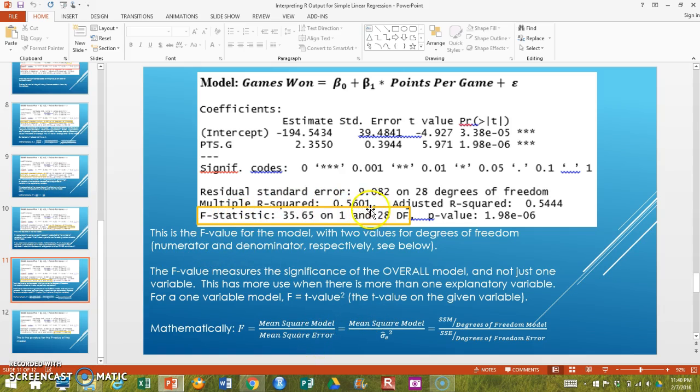Because we have a ratio of two things that we measure, mean square model and mean square error, the F statistic has two numbers to describe the degrees of freedom. The first number is called the numerator degrees of freedom, and it's just the degrees of freedom of the model. The second number is the error degrees of freedom or denominator degrees of freedom. We'll see this more clearly once we get into multiple regression.